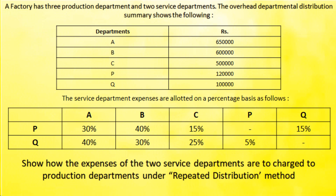A factory has three production departments — A, B, and C — and two service departments — P and Q. The overhead departmental distribution summary shows the following: after primary distribution, department A is 6,50,000; department B is 6,00,000; department C is 5,00,000; department P is 1,20,000; and department Q is 1,00,000. They have also given the secondary distribution percentages, which is the basis we need to use for our calculation work.